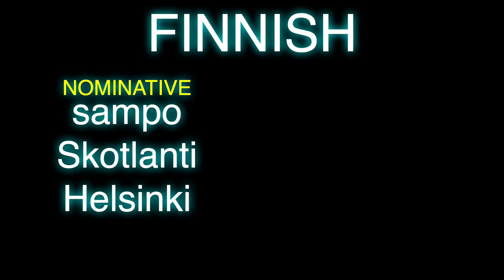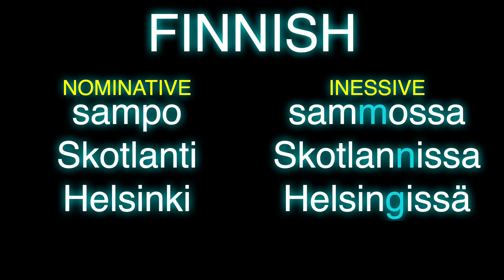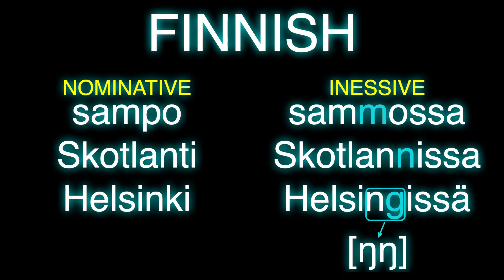Assimilation can also go the other way. In Finnish, you have nominative forms like 'sampo' — a key thing in the Kalevala — 'Skotlanti,' which is how Scotland comes out in Finnish, and 'Helsinki,' the capital of Finland. In the inessive case, you add a '-ssa' type suffix, and there's a little change: 'sampo' becomes 'sammossa,' 'Skotlanti' becomes 'Skotlannissa,' and 'Helsinki' becomes 'Helsingissä,' where that N-G in Finnish orthography is actually a geminate velar nasal. Essentially voiceless stops become geminates to build up for a syllable with a coda.